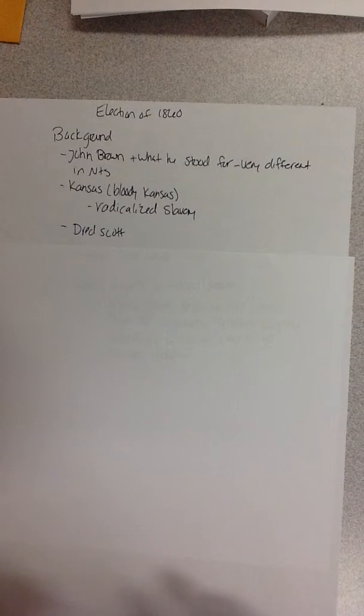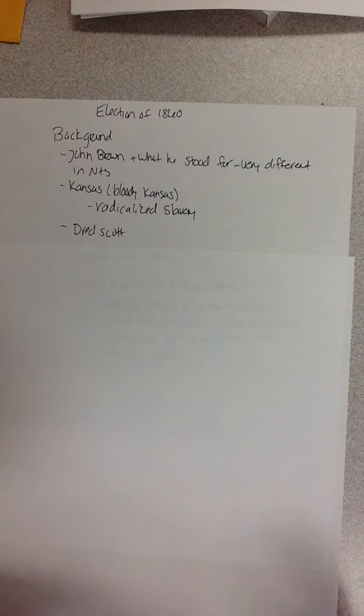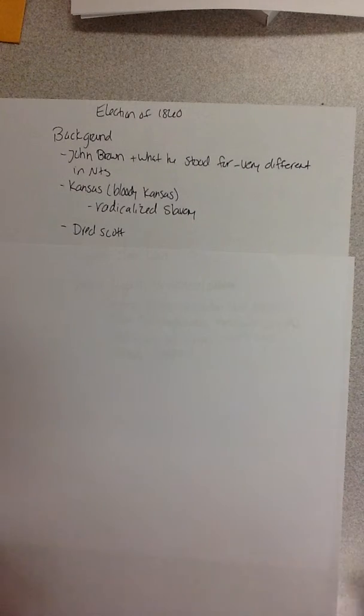Bleeding Kansas radicalized slavery — people got violent because of it, and John Brown was a huge part of that. The Dred Scott decision made slaves property instead of citizens, so they could not get any rights to be free.